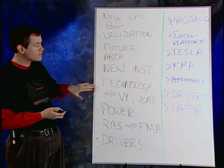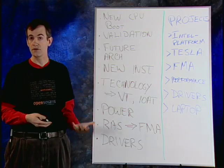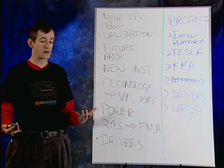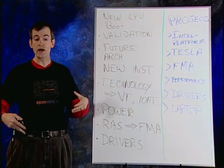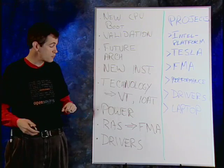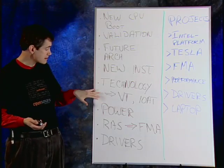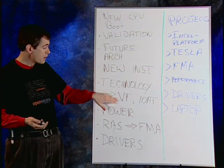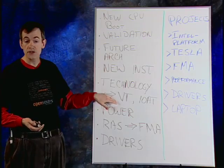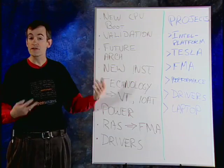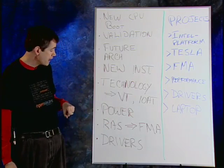We also have a variety of new technologies we're introducing with our new processors. Every time there's a new processor generation, we look at different architectural technology directions we want to go in, and we're adapting Open Solaris to those things. Some of the most powerful ones are virtualization technology and IO acceleration technology — those are examples of work we're doing.